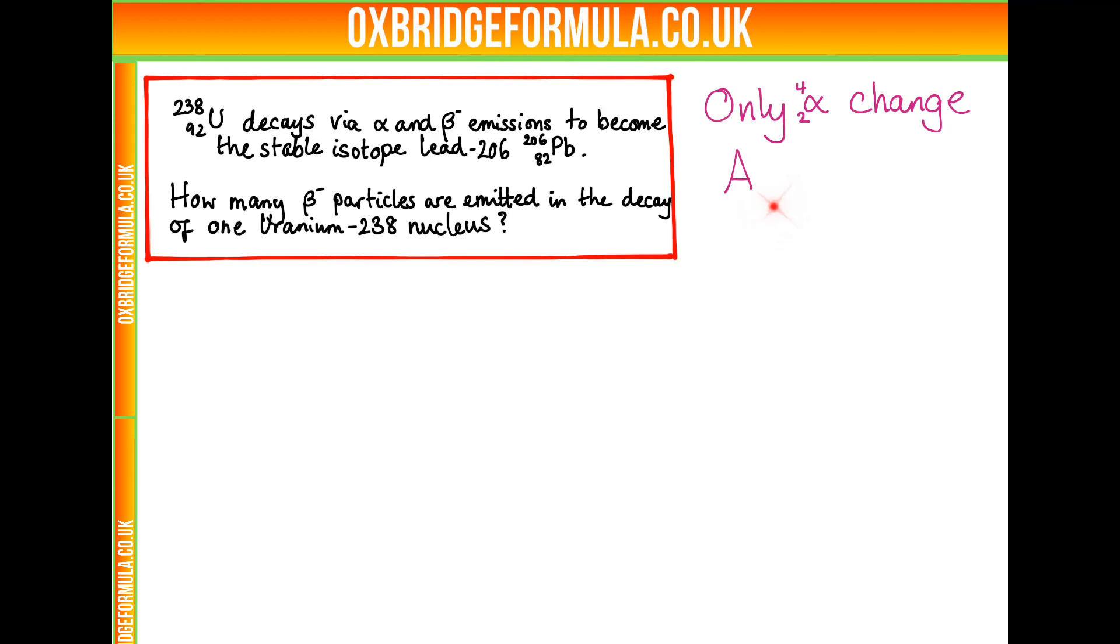Only alpha changes the atomic number. So from 238 to 206, there is 32 difference in nucleon number. This corresponds to 8 alpha emitted.